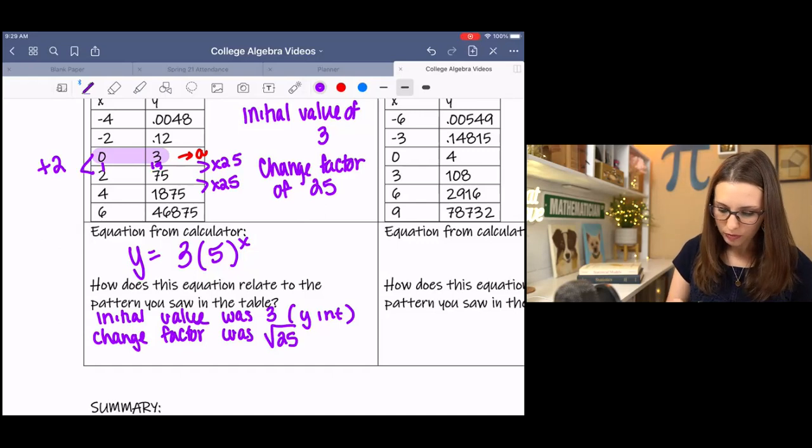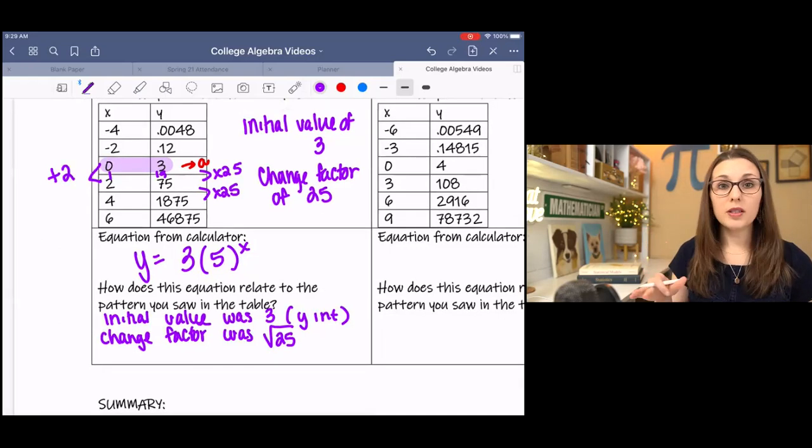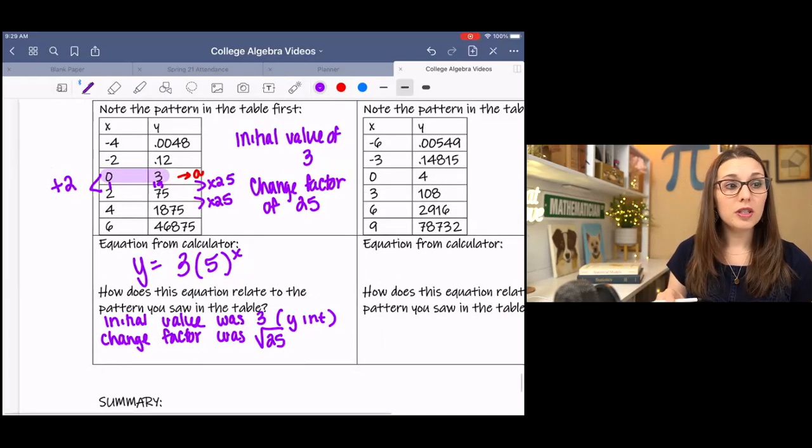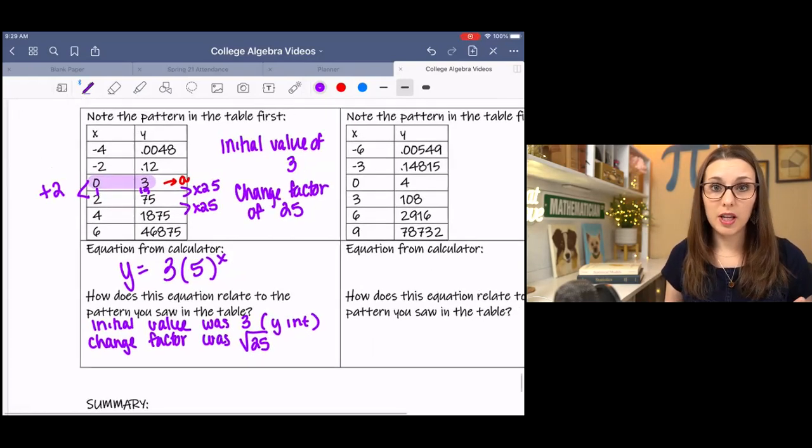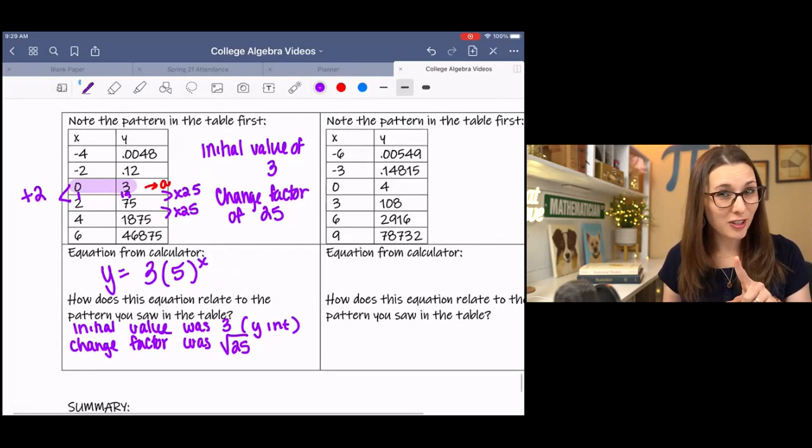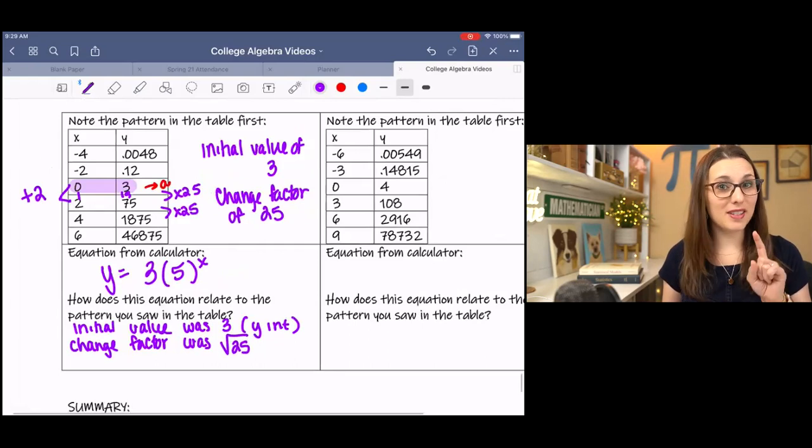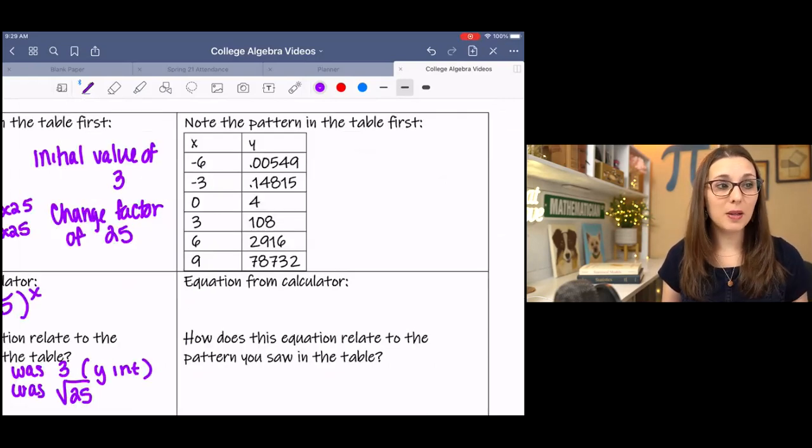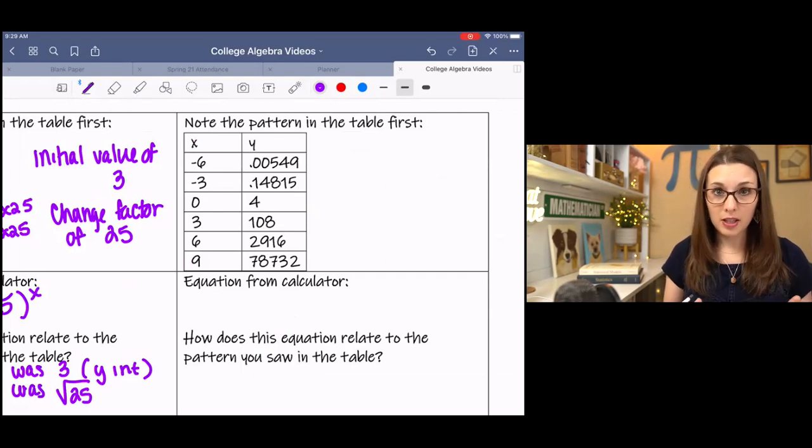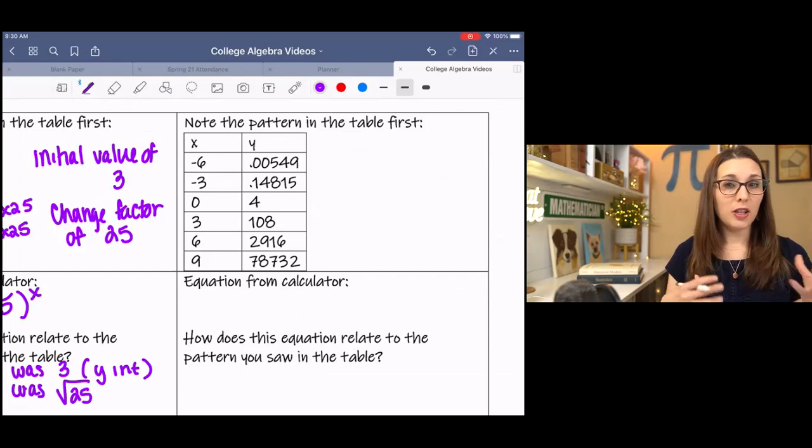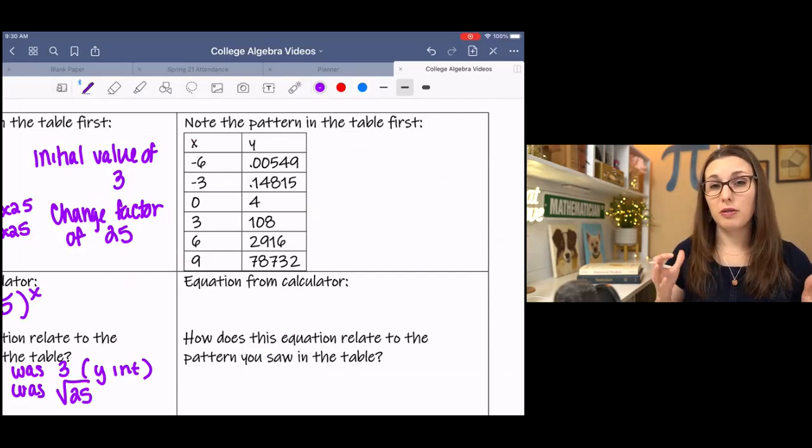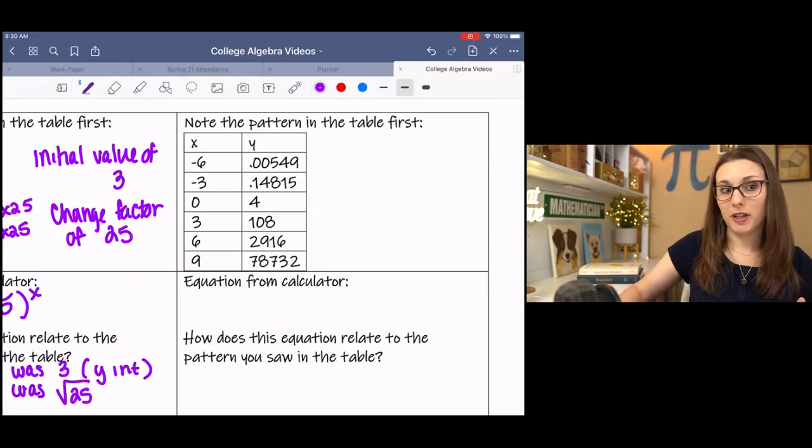Next example, I want you to pause it and try this on your own. See if you can make a hypothesis based on the table of values. Pay attention to the x, the change in x because that is important. We've seen in the last example that it plays into what's happening. So pay attention to the change in x. Pay attention to the change in y. See if you can come up with a hypothesis as to what you think it would be and then use your calculator to confirm it.